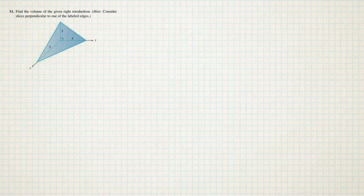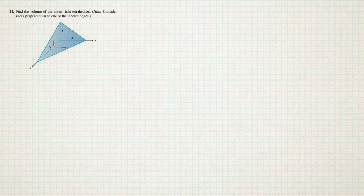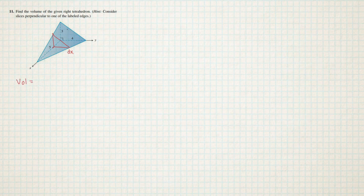I'm going to go over this problem of finding the volume of this tetrahedron shape. The first thing I'm going to do is consider slicing it like this — I'll put a little slice right here and get this kind of triangle. I'm imagining a very little distance traveled along this direction, so I'm going to integrate with respect to X. The formula for the volume of one of these little slices is going to be the area of a triangle times the thickness of that little slice, DX.